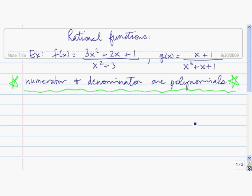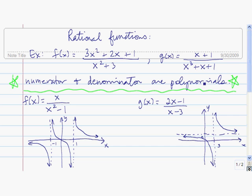Let's look at the graphs of a couple of rational functions. What you notice here is that there are a couple of x values in which the function is growing and falling without bound — falling without bound and growing without bound. These are called vertical asymptotes.